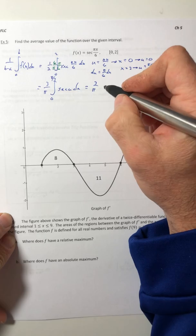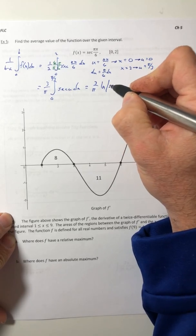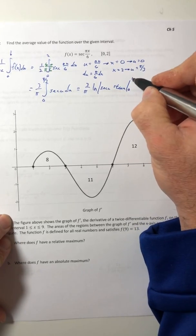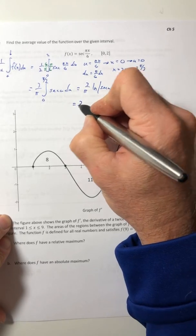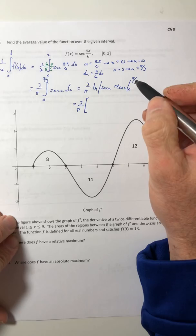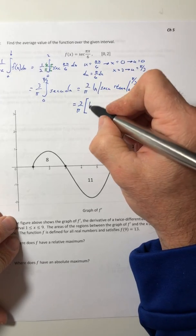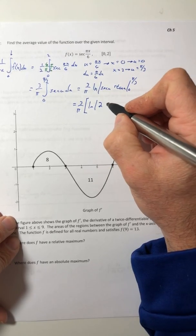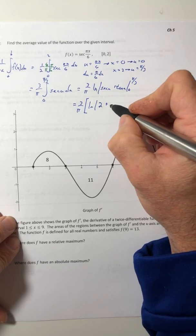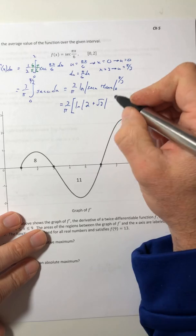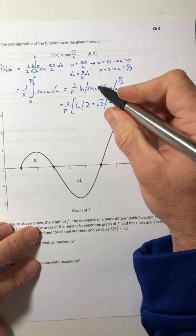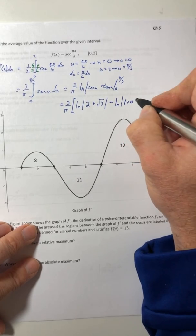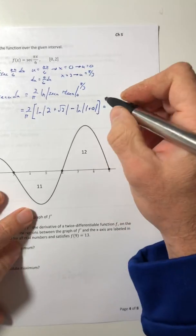So integrate: 3 over pi times ln absolute value of secant u plus tangent u, going from 0 to pi over 3. Let's leave this 3 over pi on the outside and we're gonna plug it in. At pi over 3, secant of pi over 3 is 2 and tangent of pi over 3 is root 3. Then minus, plug in the 0: secant of 0 is 1, tangent of 0 is 0.